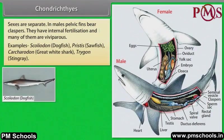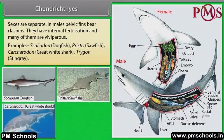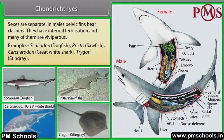Examples: Scoliodon (dogfish), Pristis (sawfish), Carcharodon (great white shark), Trigon (stingray).